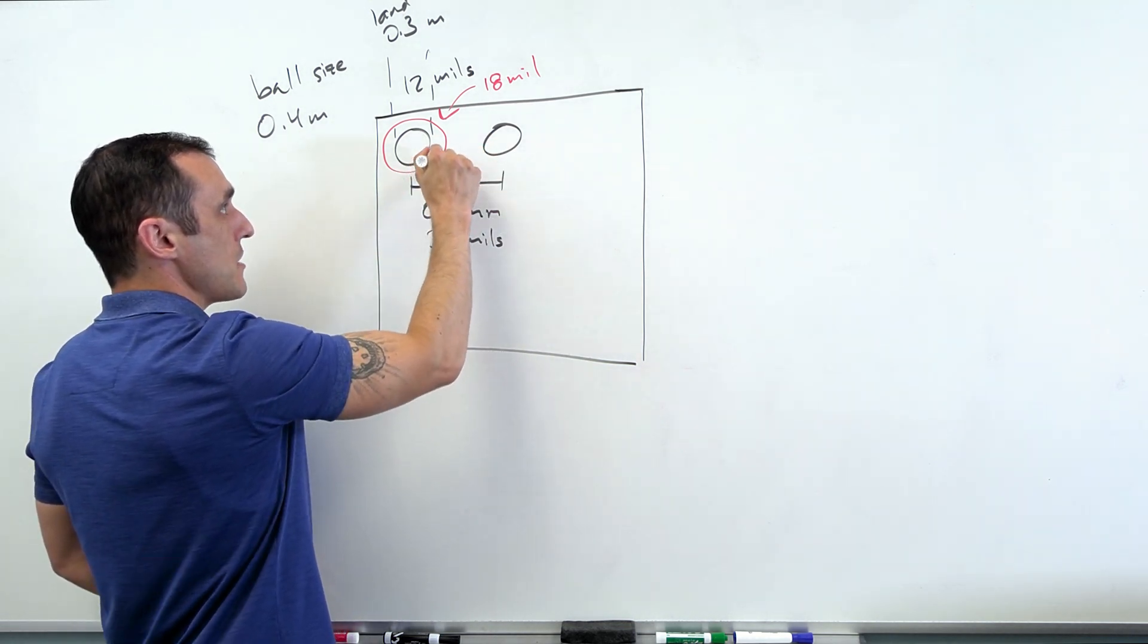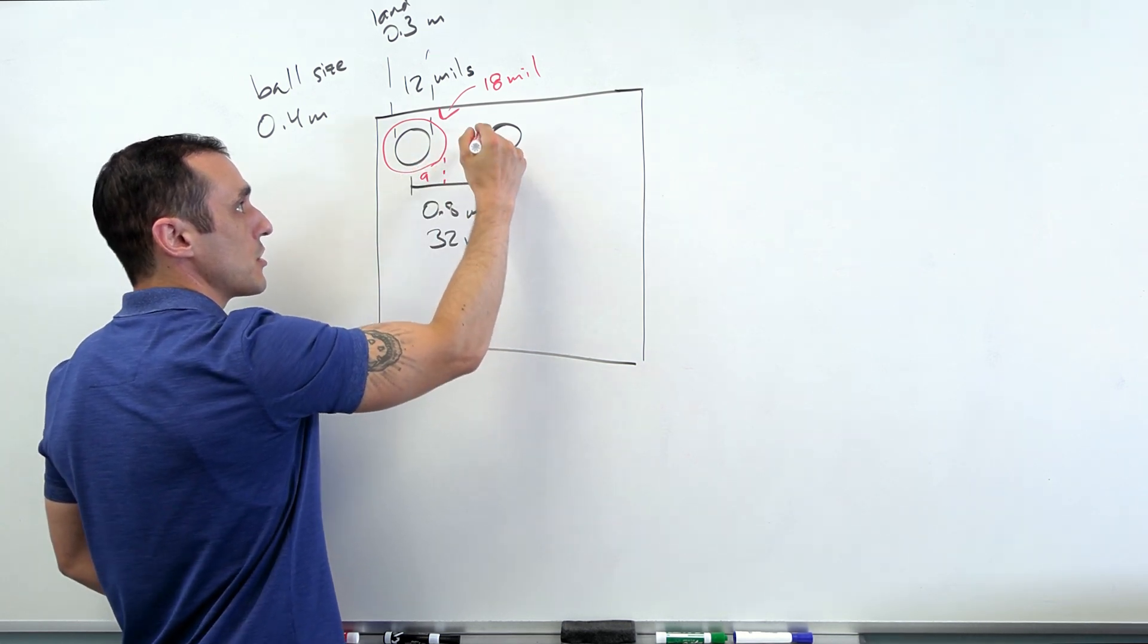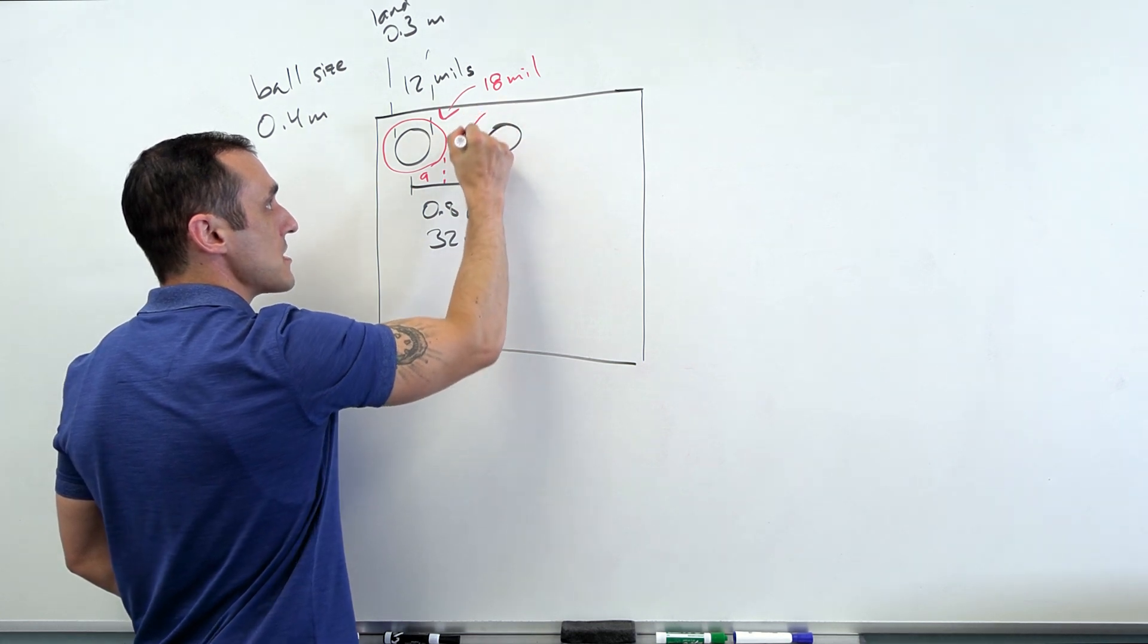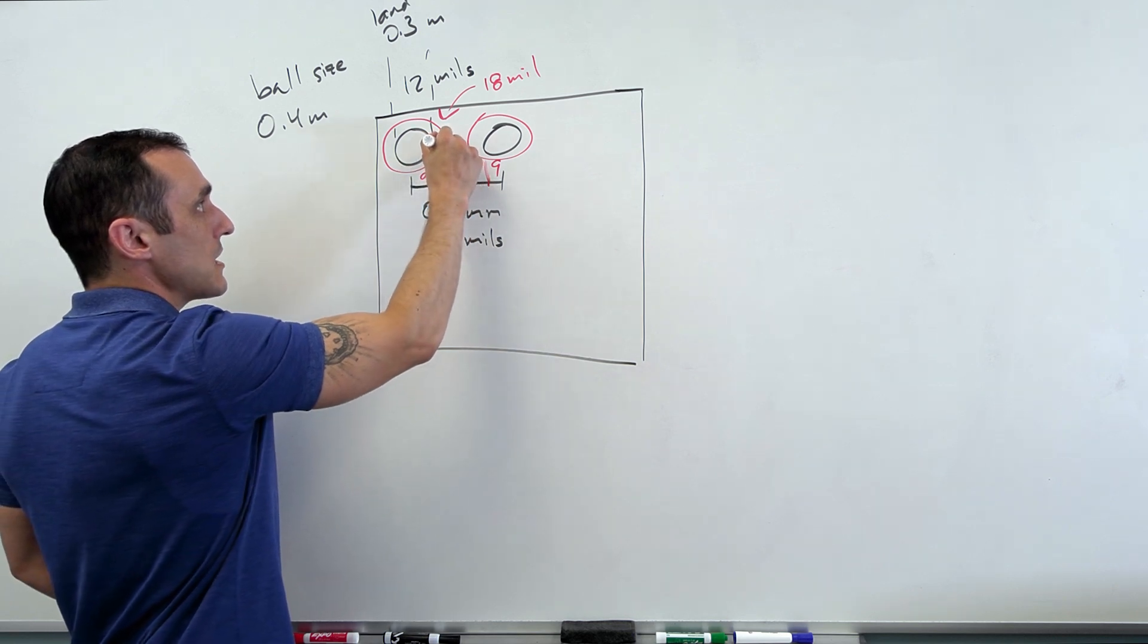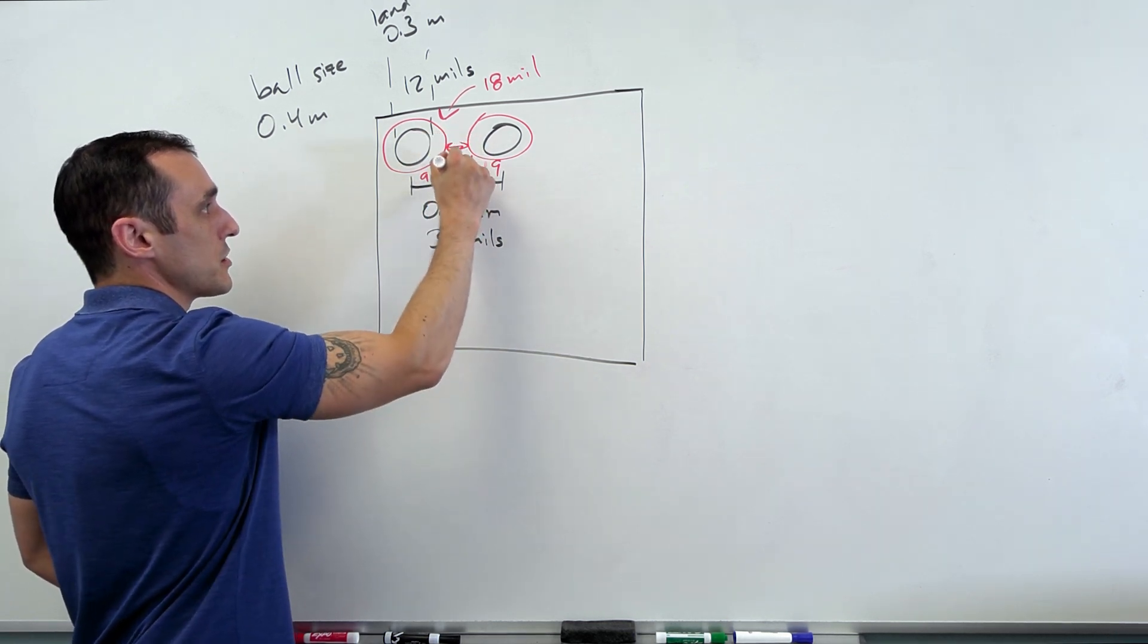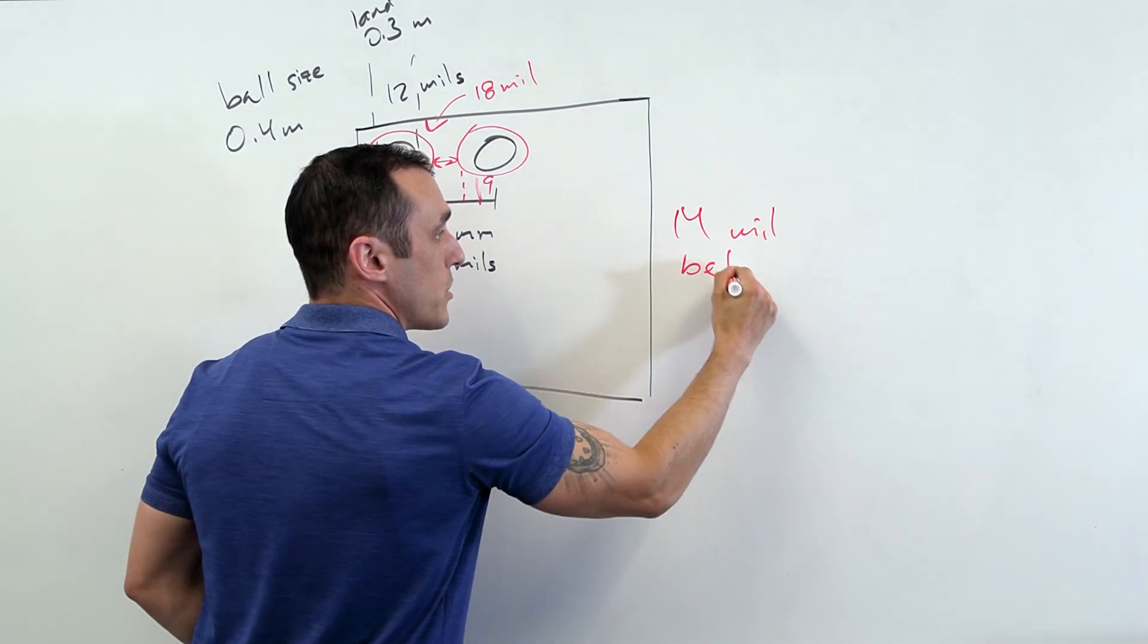Well, this is 32. That means this distance right here is nine mils. That means this distance right here is also going to be nine mils to the next neighboring pad. And how much spacing does that leave me? Well, here, this is 18. So that leaves about 14 mil spacing right here. So that leaves 14 mil between pads. So this is a pretty comfortable clearance that most fabricators are not going to have a problem with even if they're doing BGAs.